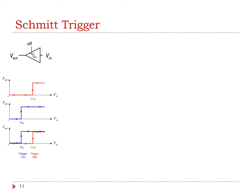Different from the simple comparator, the Schmidt trigger is a special circuit which switches the output based on two different thresholds: the trigger high threshold and the trigger low threshold. The output of a Schmidt trigger depends on the current input and the history of the input. When the input voltage increases from zero, the output remains low until the input becomes larger than the high threshold. Similarly, when the voltage decreases gradually, the output remains high until the input becomes smaller than the low threshold.